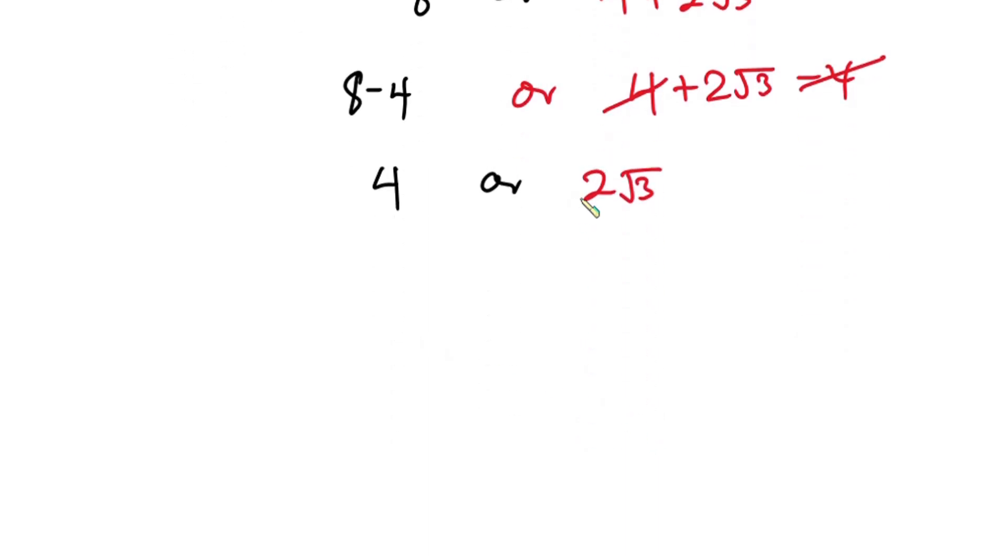Now I want to get rid of this square root, so I'll raise each side to the second power again. So we have 4² which is 16, and on this side we have (2√3)².